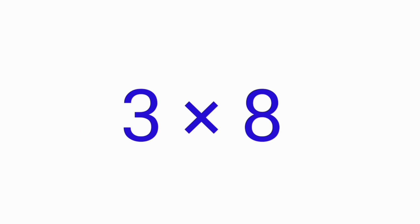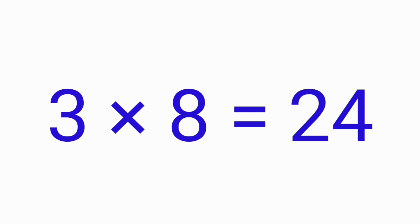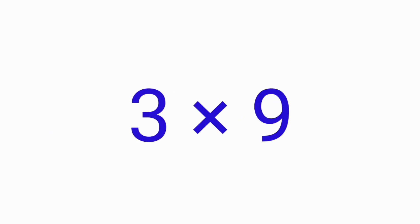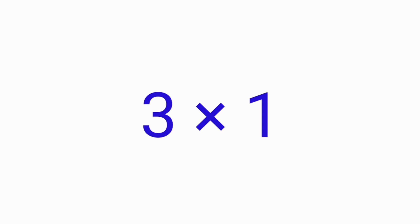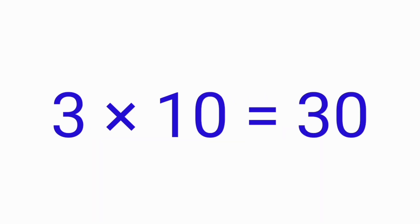Three eights are twenty-four. Three nines are twenty-seven. Three tens are thirty.